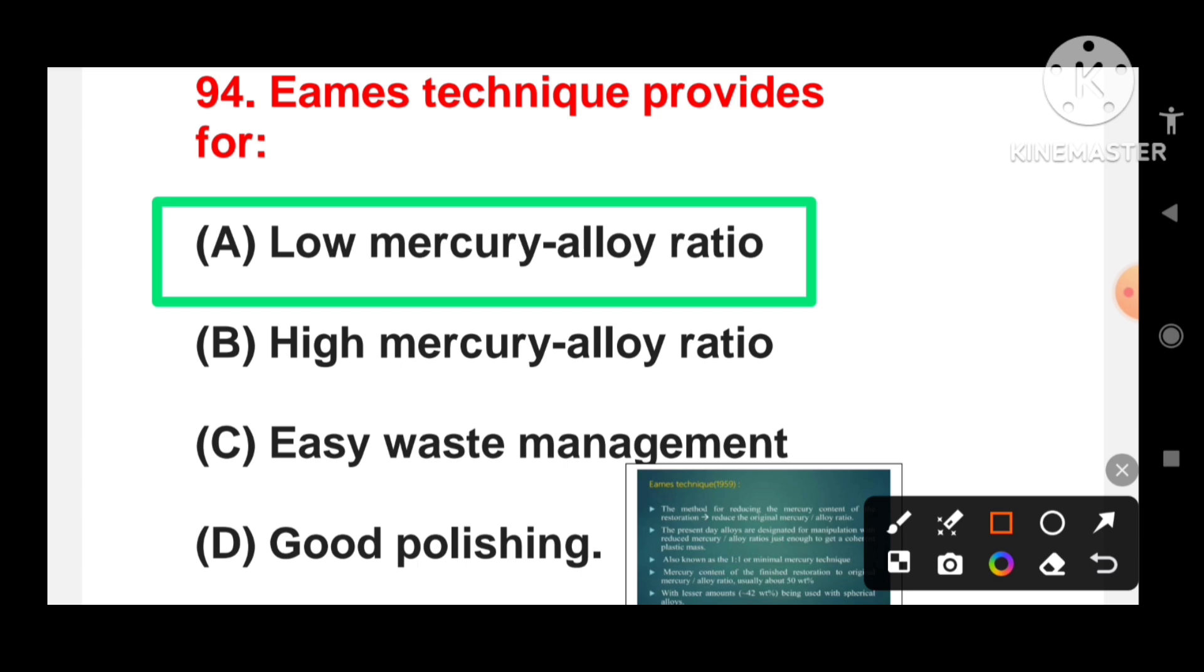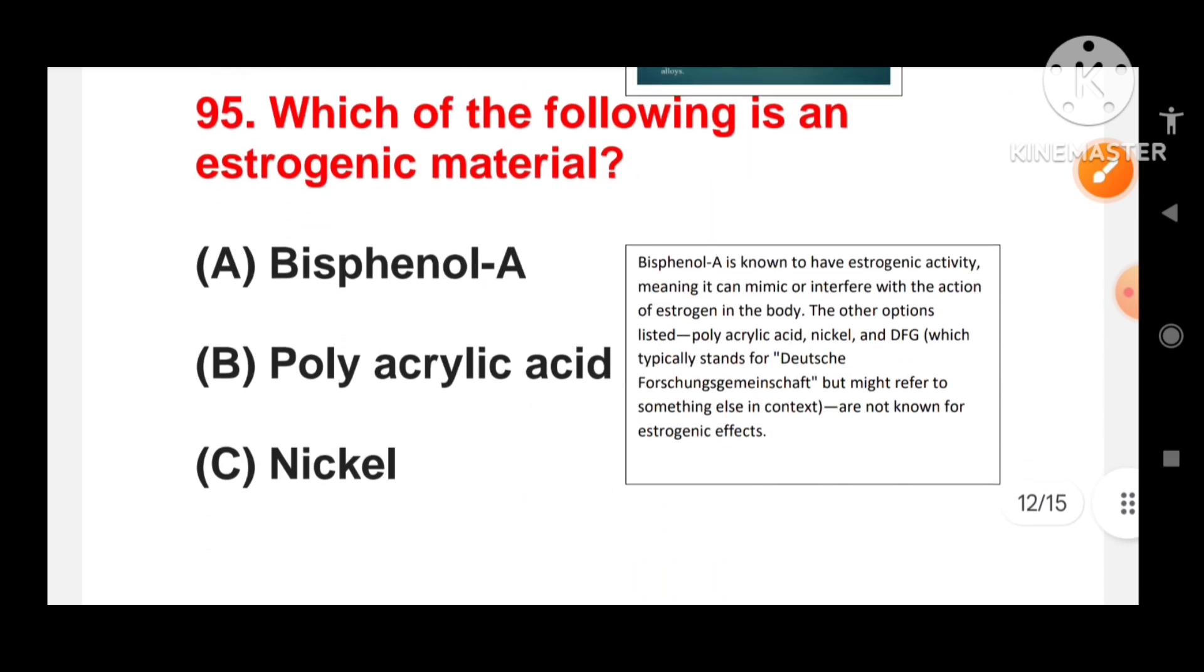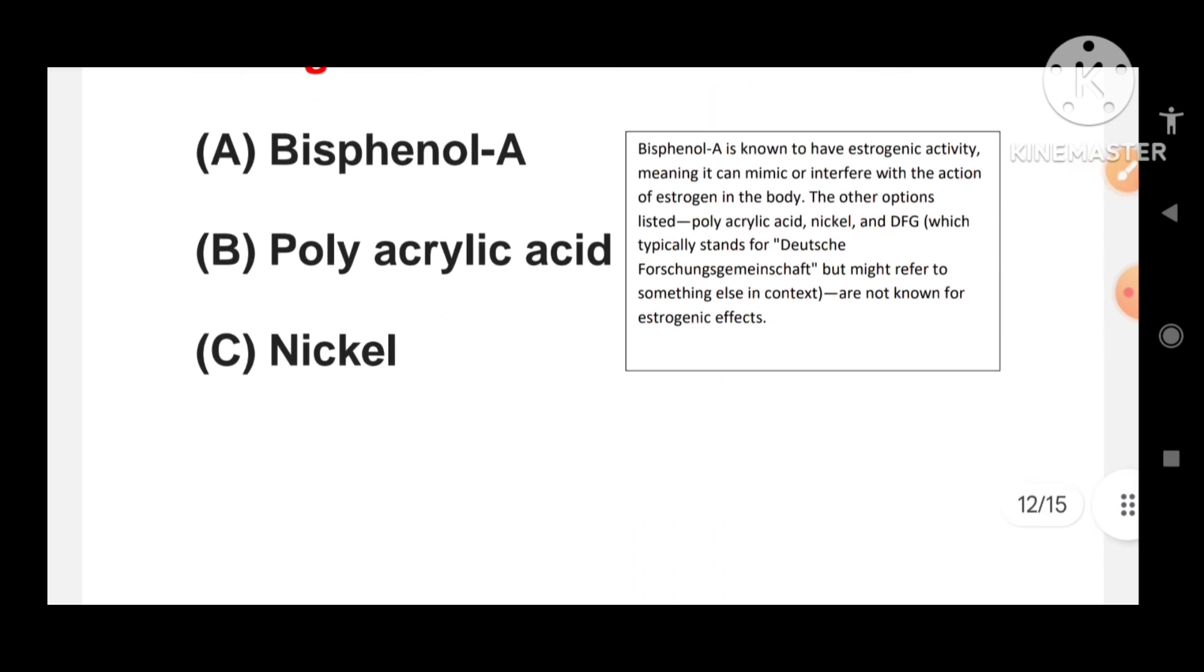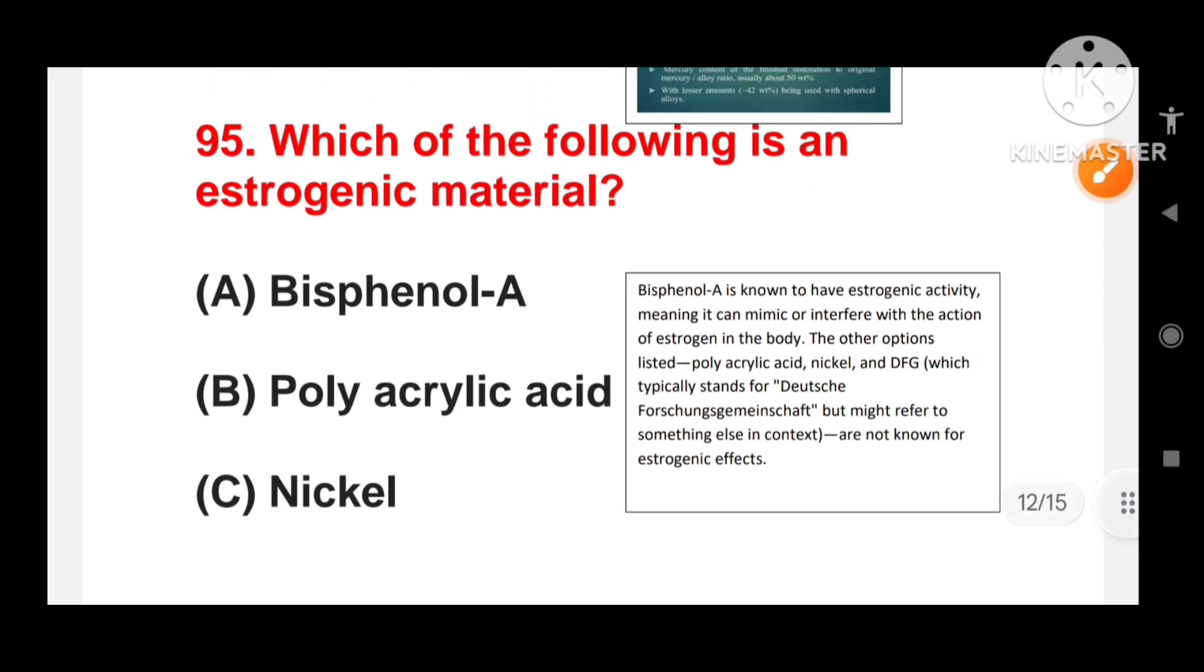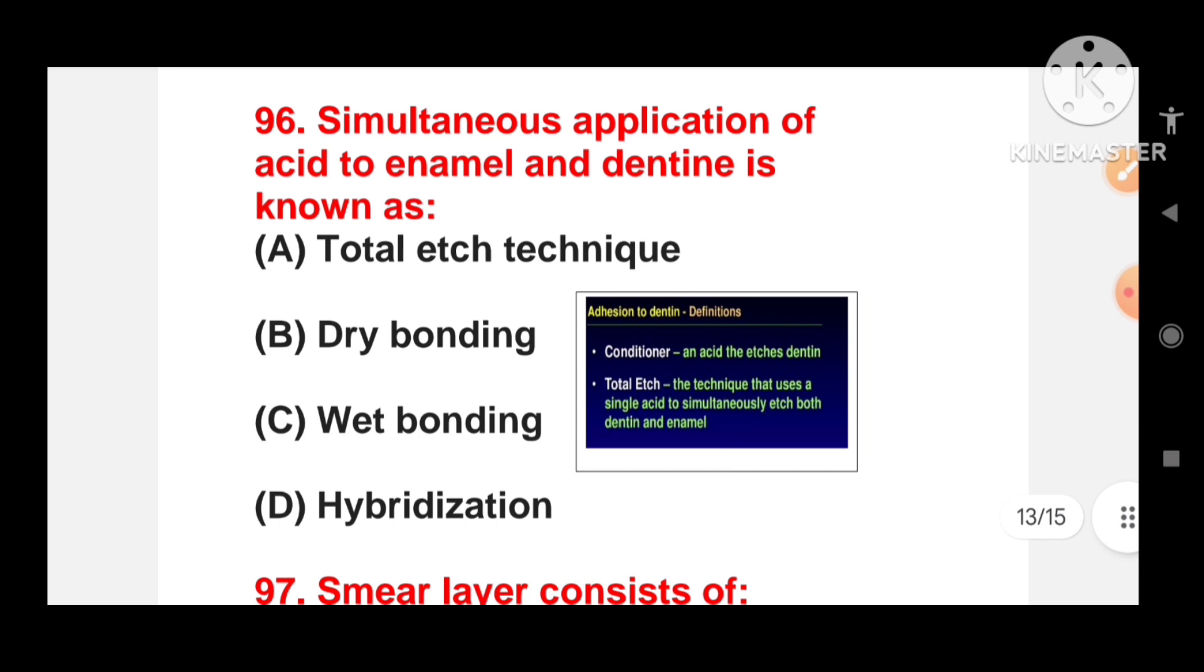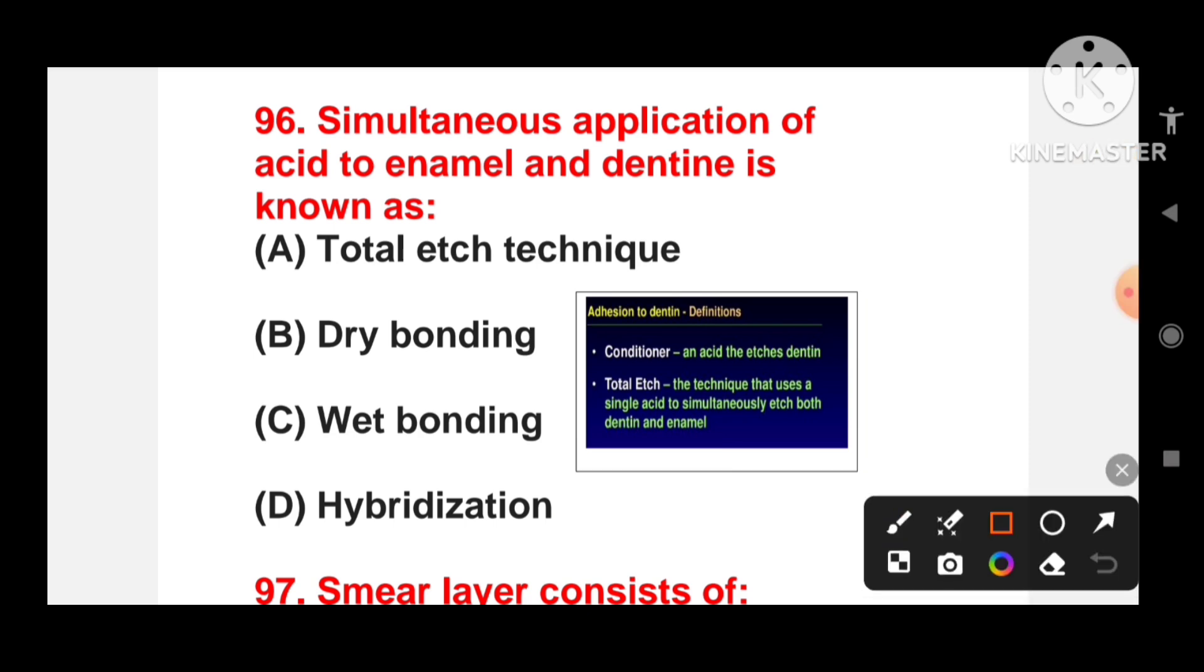Which of the following is an estrogenic material? Bisphenol A, polyacrylic acid, nickel or direct filling gold? Bisphenol A is known to have estrogenic activity, meaning it can mimic or interfere with the action of estrogen in the body. Simultaneous application of acid to enamel and dentin is known as total etch technique.